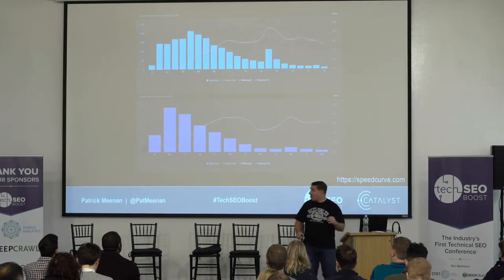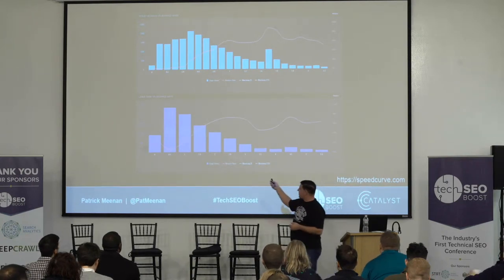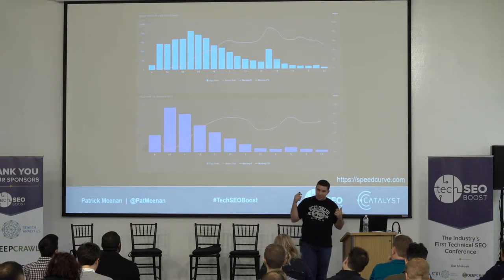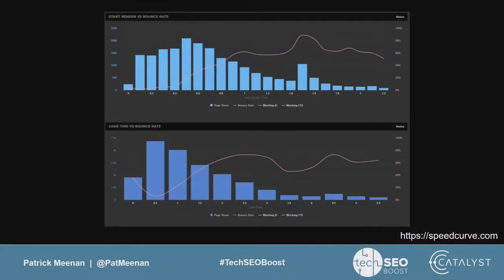These are out of SpeedCurve — WebPageTest itself as a site, just as an example. The five-second mark is not a magical number. My users are apparently a lot less patient. The top chart is time to first paint when they actually see something showing up, and the bottom chart is DOM content loaded. Page load time around two seconds is already where I've lost all of my users.